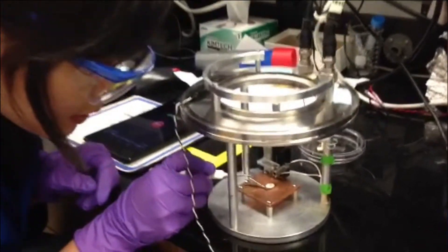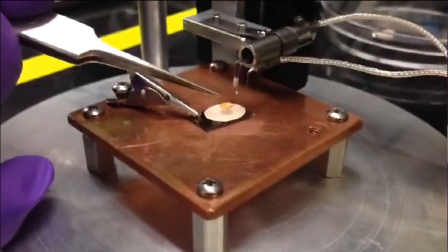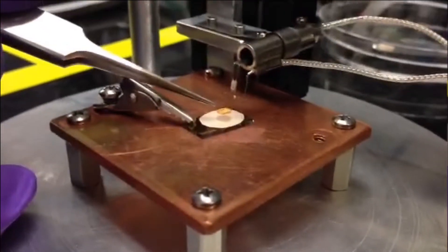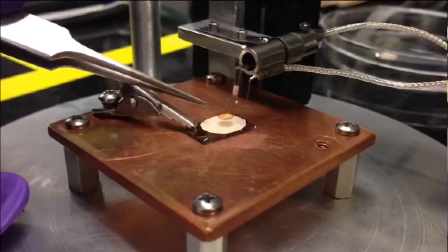To start the measurement, the first step is to load the sample onto the stage. This small gold mesh is the Kelvin probe reference. Sample film is loaded right underneath the probe. The distance between the probe and the sample is capped at 1 mm.